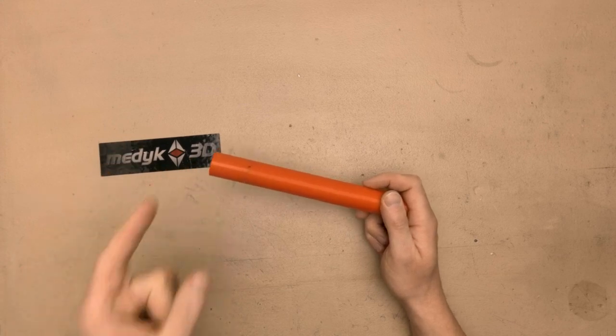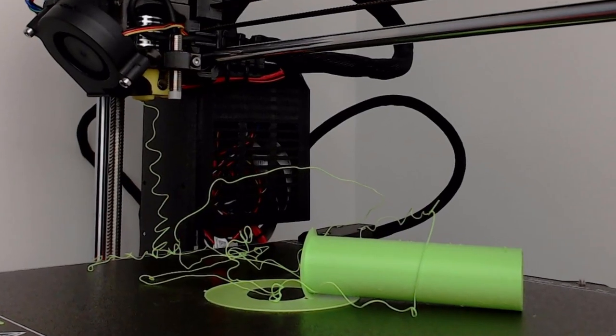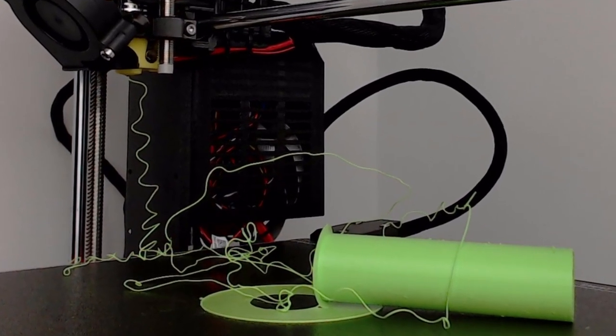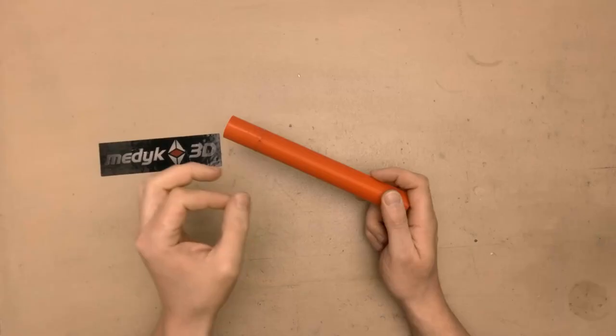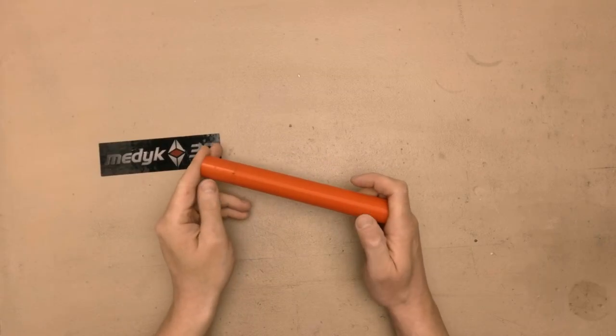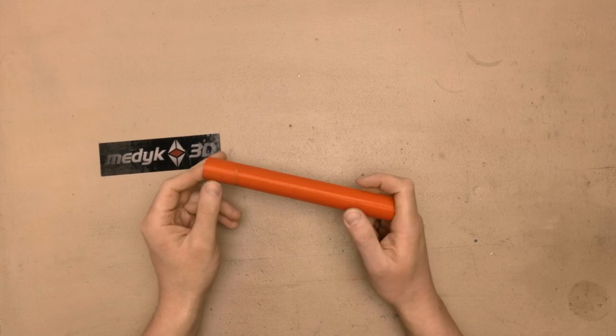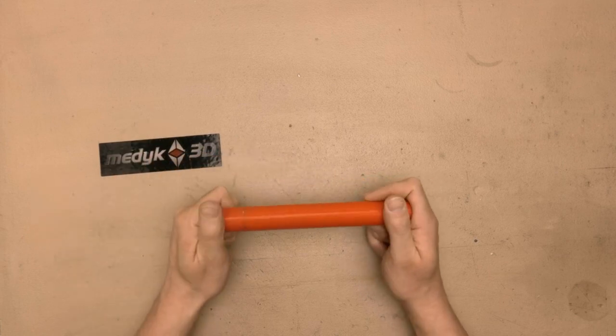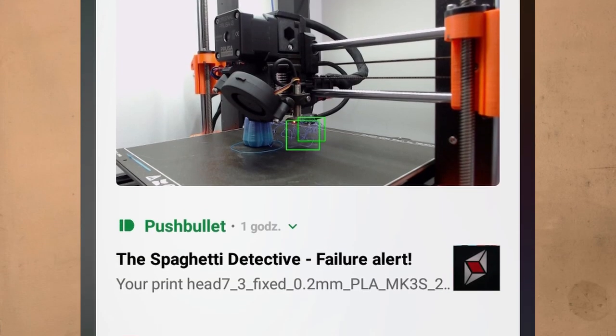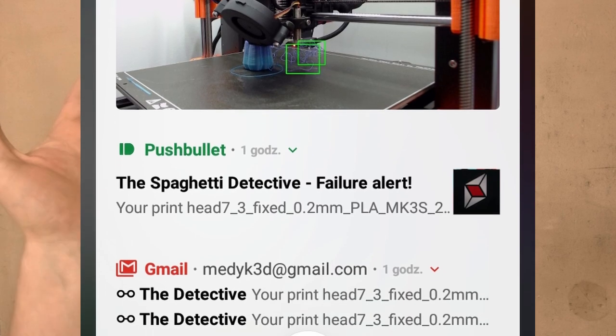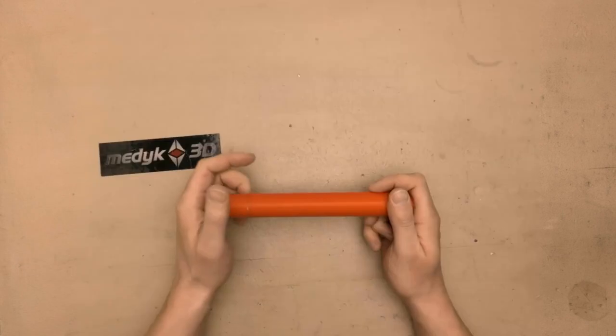I have great news for you. There is a ready-made solution and it is called the Spaghetti Detective. It is using machine learning to verify if your print is failing or not. If there is something suspicious, then you simply get notification to your email or mobile phone. It can also pause your print, and in this way, save you a lot of filament.